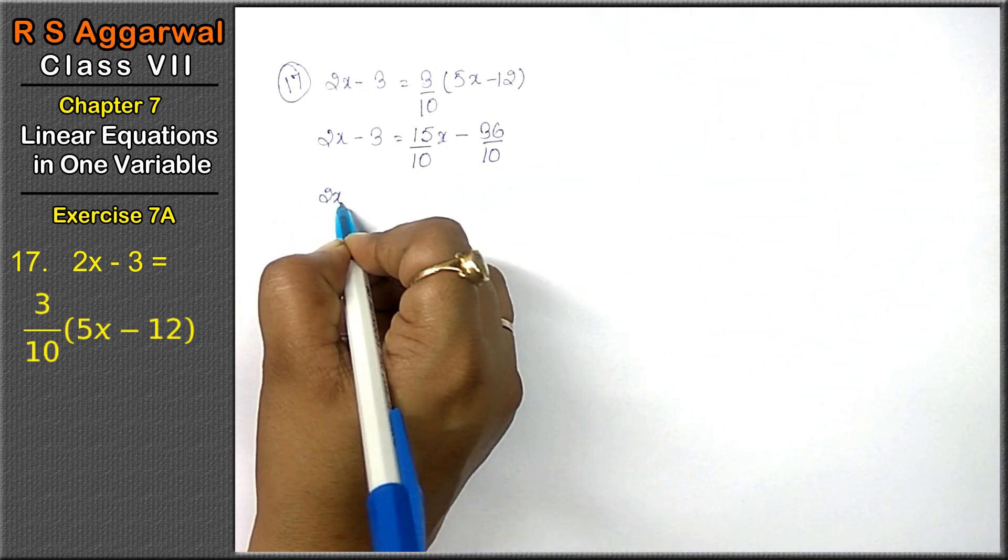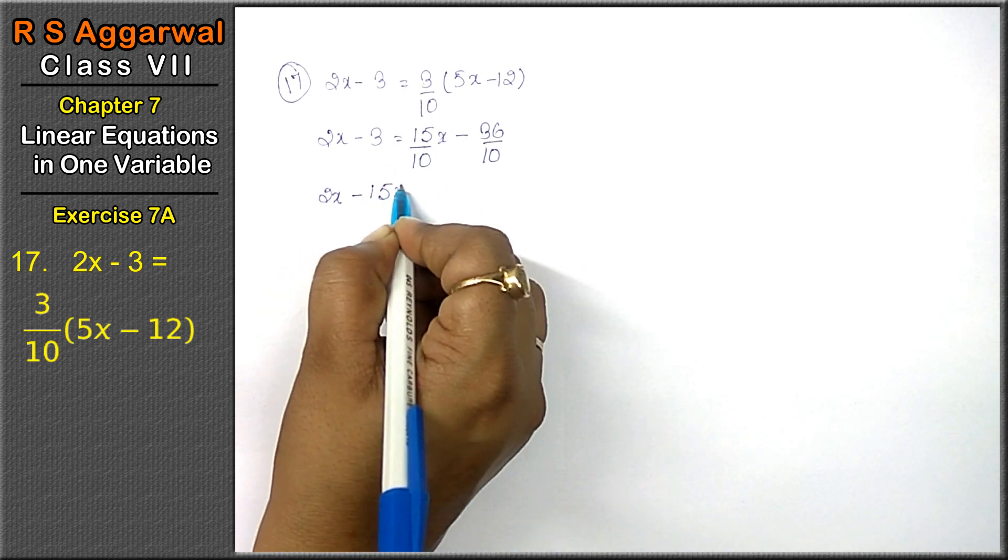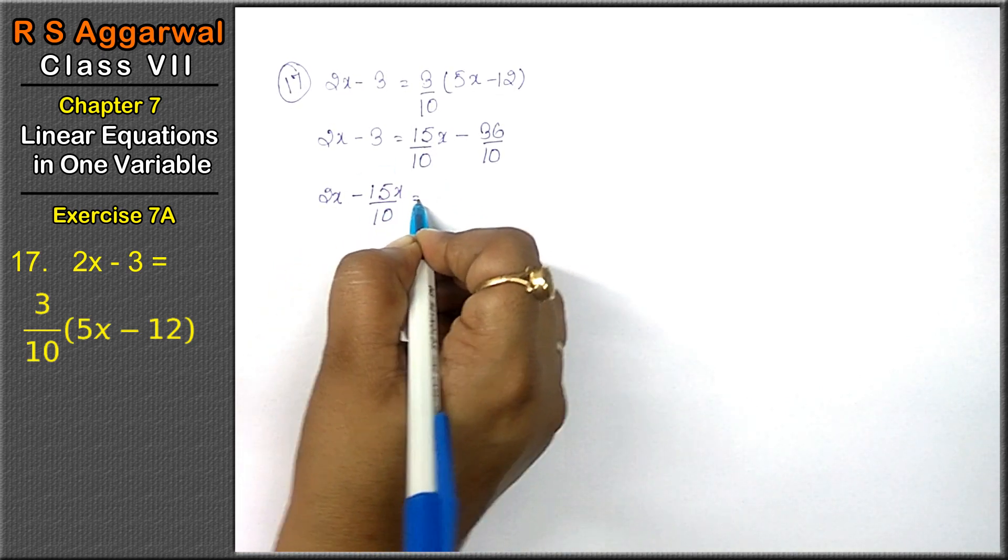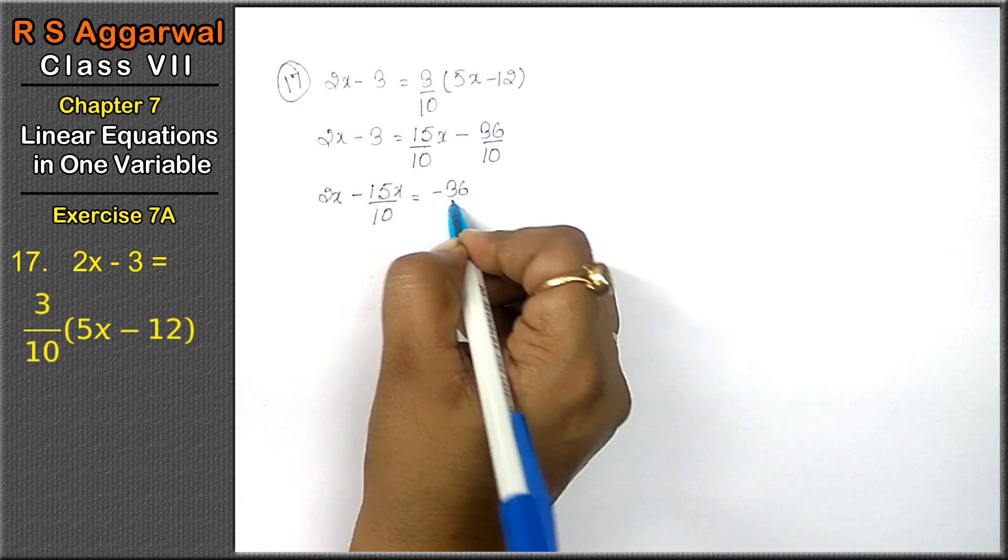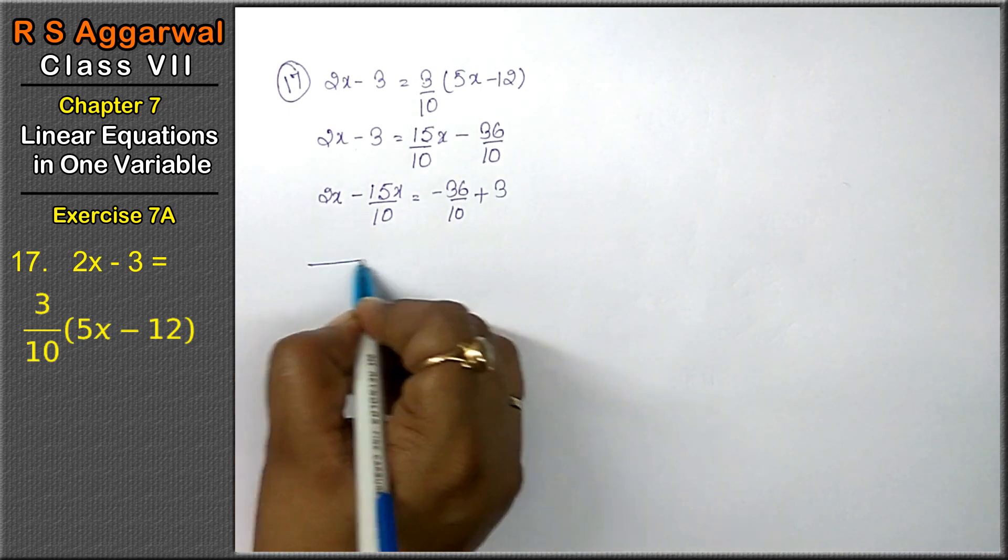Now x terms on x side. Non-x terms on this side. 2x minus, plus becomes minus there. 15x upon 10 equals to minus 36 upon 10. Here minus becomes plus there. Now take the LCM.